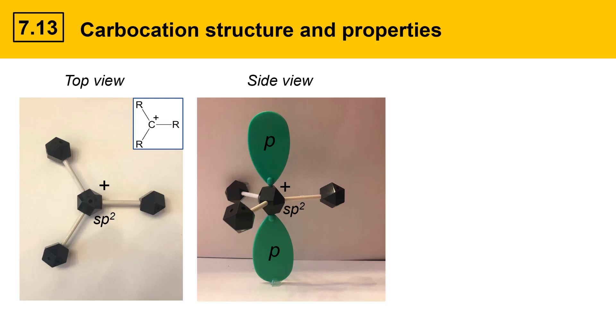If this were drawn in a traditional structure type drawing it would look like this where the r group here is the wedged group, we have the dashed group, and we have the in-plane r group.